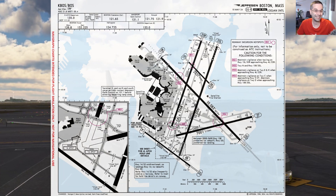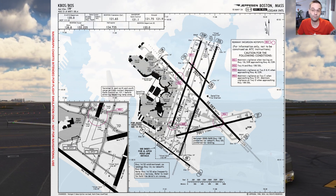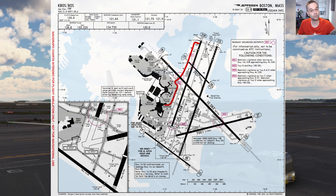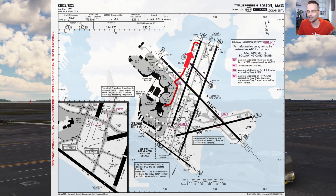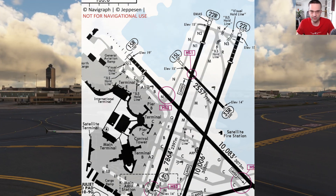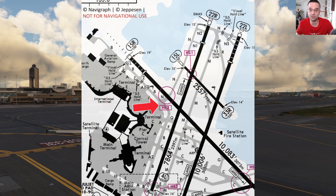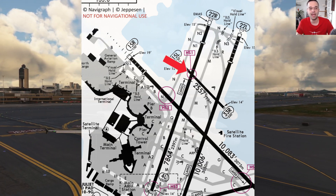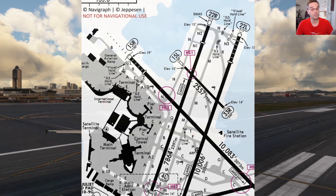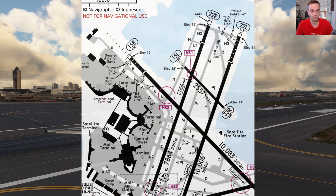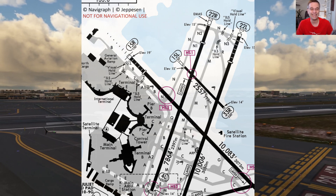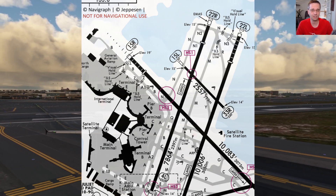Each taxiway on the chart is identified by one or two characters, so when you're ready to get moving you'll typically get an instruction to follow a series of taxiways. For today we're going to be going to runway 22R via Alpha and November, so it's a fairly simple taxi instruction to follow. As we're following our taxi route and we turn onto November, you're going to notice there's some red circles marked with the letters HS next to them. They're there to identify areas that are more at risk for incidents with other planes, but unless you're flying in a big online event it's not something you'll really need to worry about in flight sim.